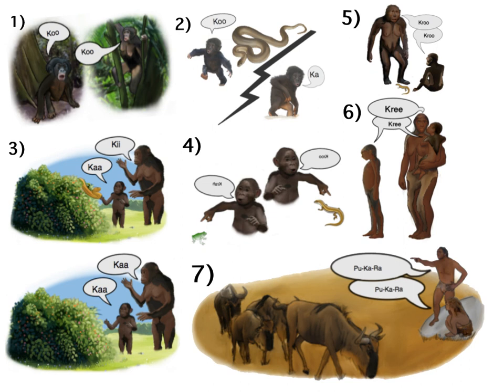Few dispute that Australopithecus probably lacked vocal communication significantly more sophisticated than that of great apes in general, but scholarly opinions vary as to the developments since the appearance of Homo some 2.5 million years ago. Some scholars assume the development of primitive language-like systems, proto-language, as early as Homo habilis, while others place the development of symbolic communication only with Homo erectus, 1.8 million years ago, or with Homo heidelbergensis, 0.6 million years ago, and the development of language proper with Homo sapiens, currently estimated at less than 200,000 years ago.